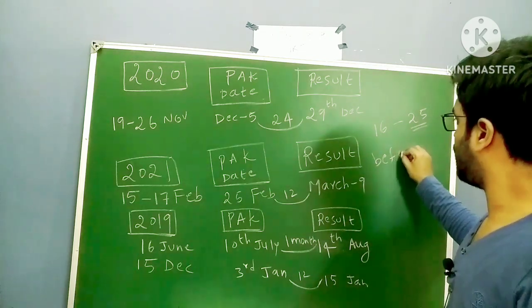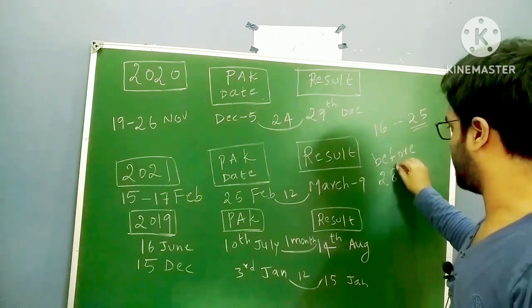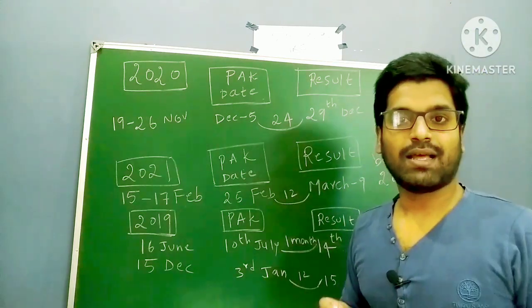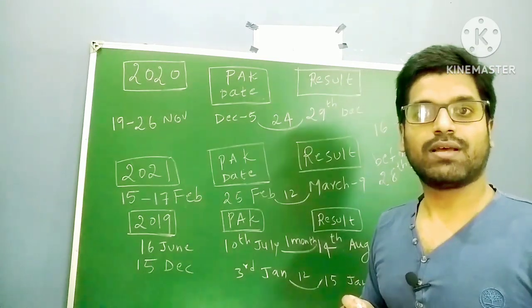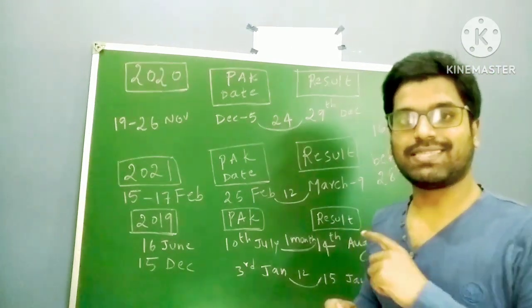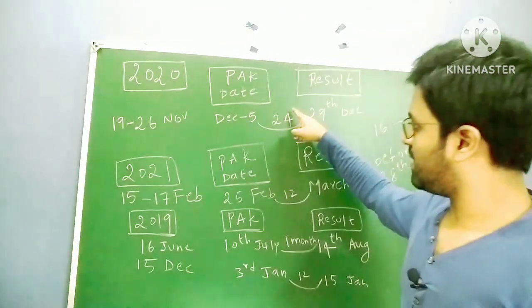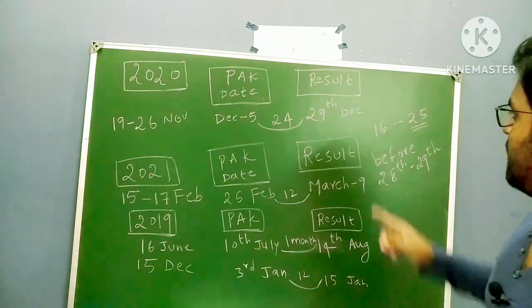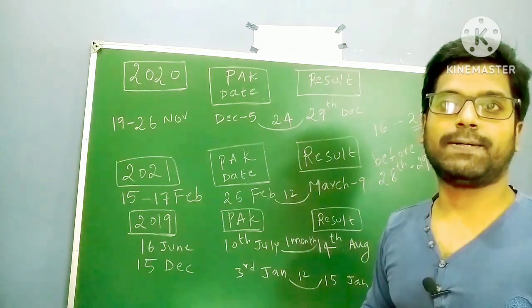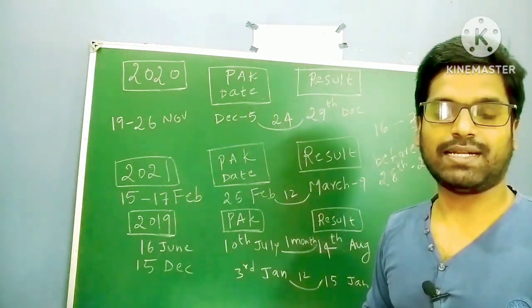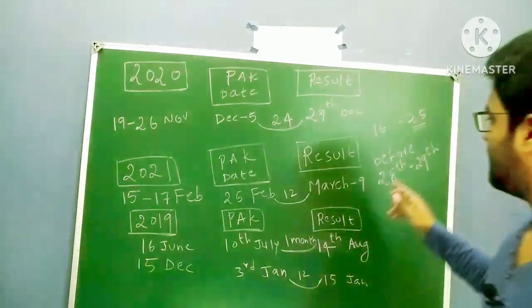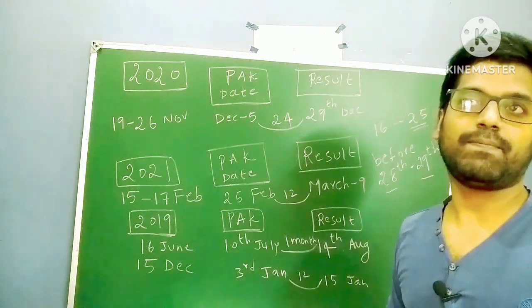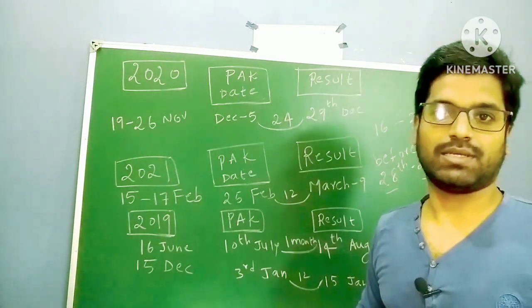I am expecting the result before 28th or 29th, or in the first week of July. This is the most probable date. But if they take this one month, then definitely you can expect your result as 16th, next month 16th, before July 16th. But I am expecting that result is going to be declared on 28th to 29th or definitely in the first week of July.